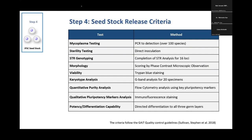Standard tests recommended for a seed stock include mycoplasma testing, sterility testing, tracking by STR, morphology, viability, karyotype analysis, purity analysis to ensure no carryover of differentiated cells, and confirmation of pluripotency. You want to be able to show that cells can differentiate into the three germ layers. Teratoma formation is not a required release test by any agency — it's useful but too variable and unreliable to serve as a release test for any seed stock.